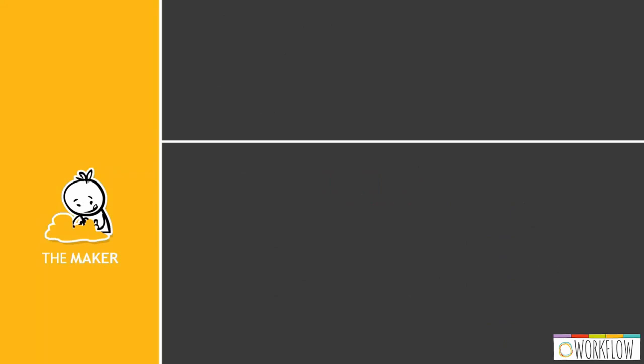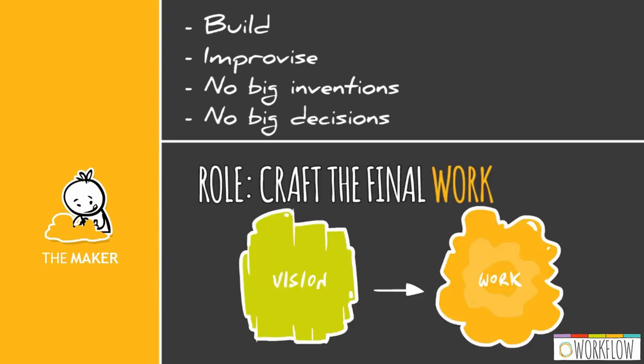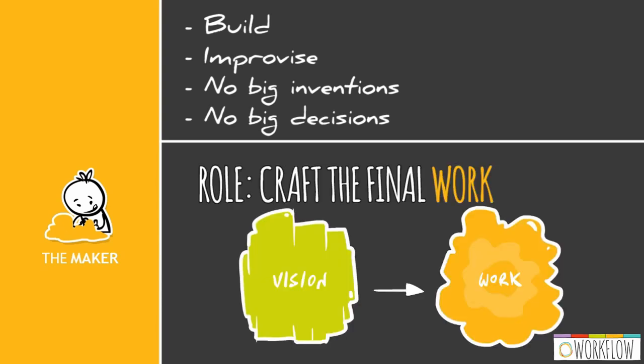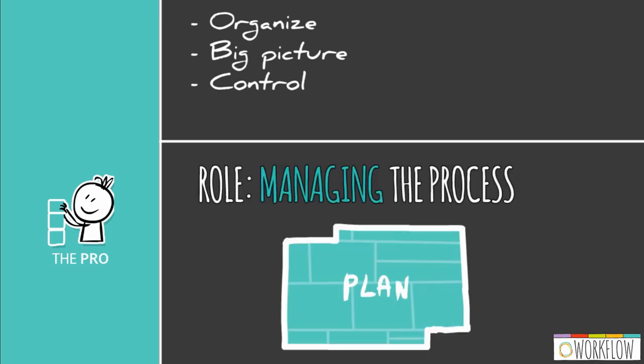The maker puts stuff together. He is a builder. He can improvise, but he doesn't invent anything or take big decisions. His role is to start with a rough shape and then slowly build it up and develop it and shape it into the vision. Last but not least, the pro. The pro is an organizer. He likes keeping track, looking at the big picture, and being in control. His job is to know who needs to do what when for the process to run smoothly and end on time.